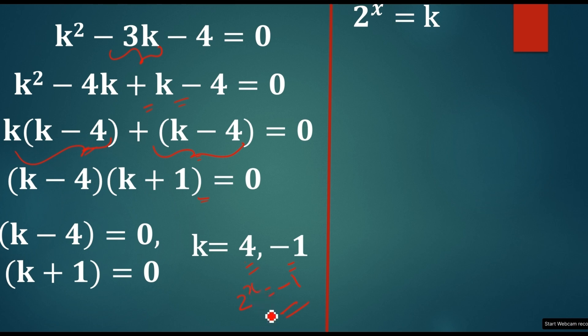2^0 is also 1, right? So, whatever the value we have on the power side, it's always we get the positive number, we never get the negative number. So, k definitely is not equal to minus 1 in this scenario.